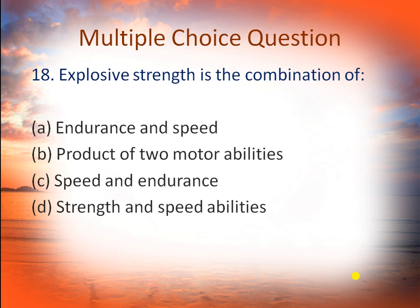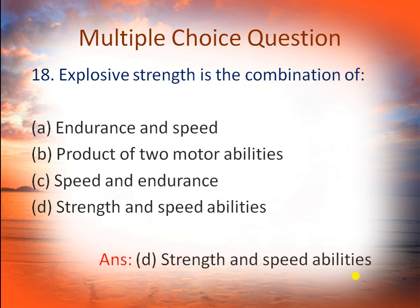Question number 18: explosive strength is the combination of — option A: endurance and speed, B: product of two motor abilities, C: speed and endurance, and D: strength and speed abilities. The right answer is option D. The combination of strength and speed abilities is called explosive strength.